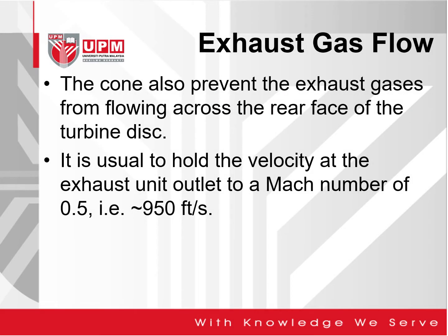The cone also prevents the exhaust gases from flowing across the rear face of the turbine disk — you don't want that to happen. It is usual to hold the velocity at the exhaust unit outlet to a Mach number of 0.5, which is approximately 950 feet per second.